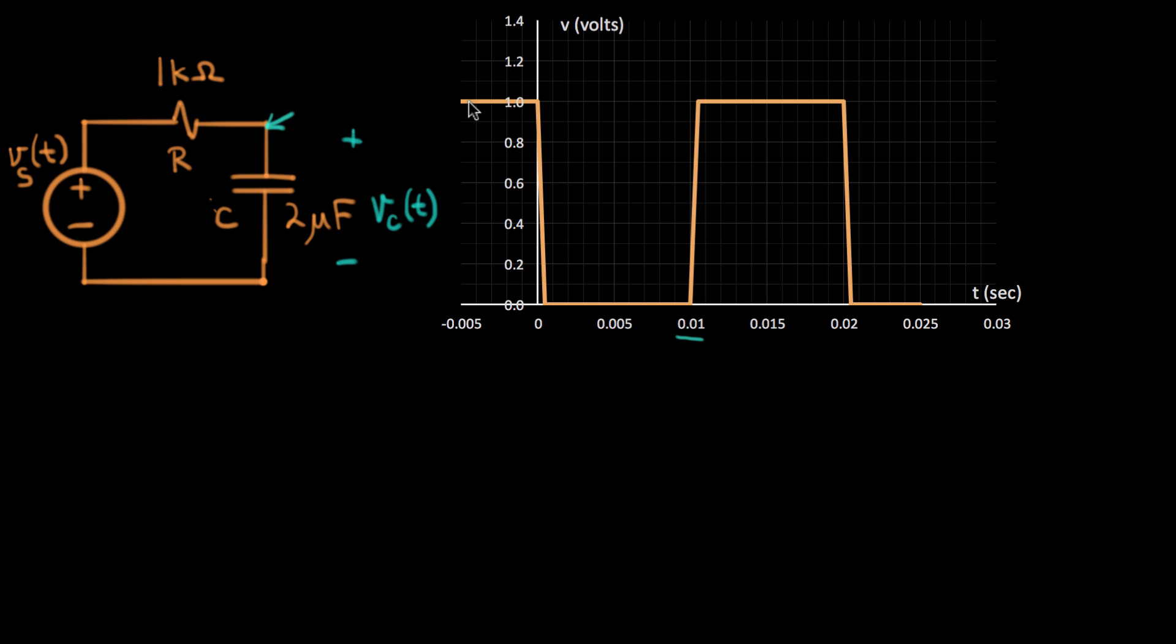It's going to start out at one volt and then step rapidly down to zero volts at time equals zero. And then again at 10 milliseconds, it'll step up again to one volt and continue on that way. This could be a clock in a circuit, in a digital circuit, or it could be any kind of digital signal.